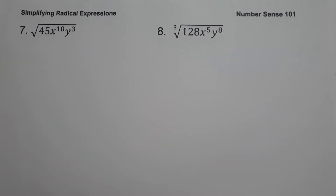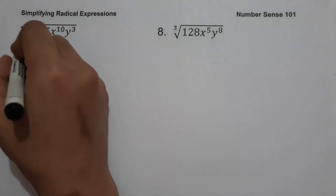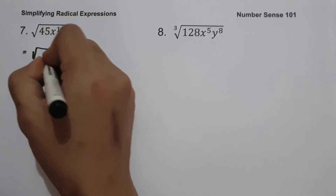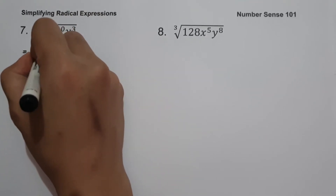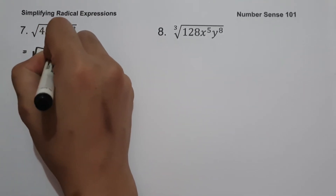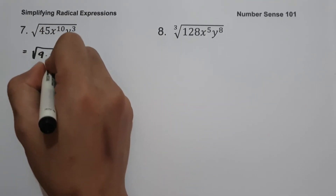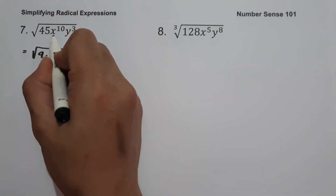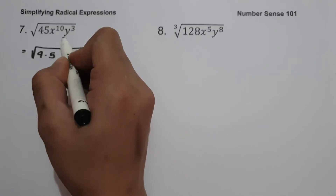On example number 7, we have square root of 45x raised to 10, y raised to 3. To simplify the given expression, let us find the factors of 45 where one factor is a perfect square. That is 9 times 5. 9 multiplied by 5 is 45. Then let us divide the exponents of x and y by 2 because our index is 2.